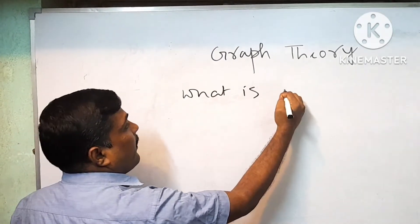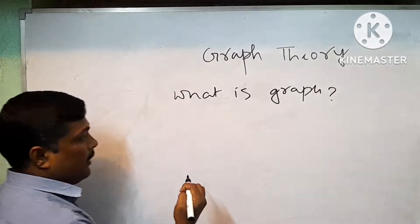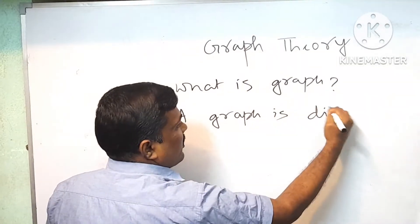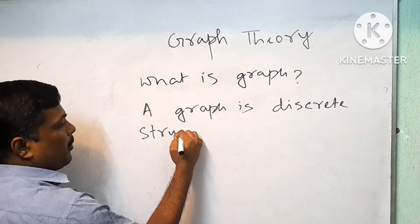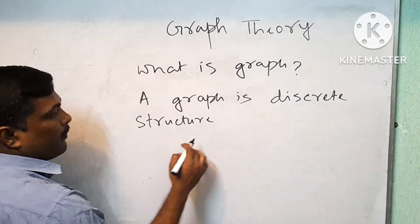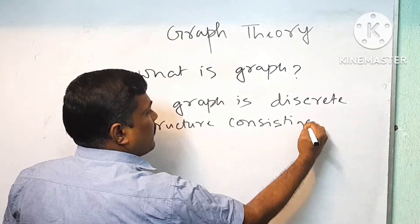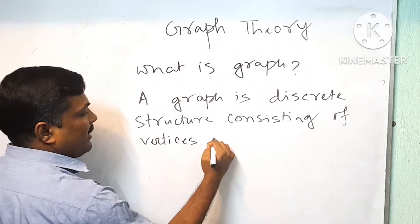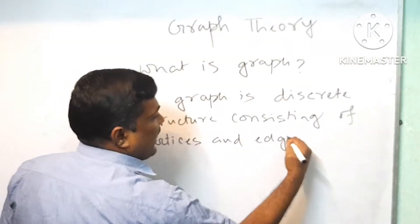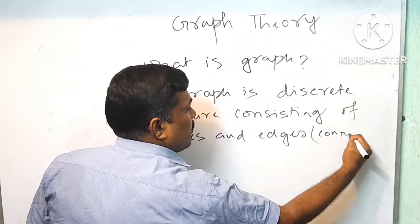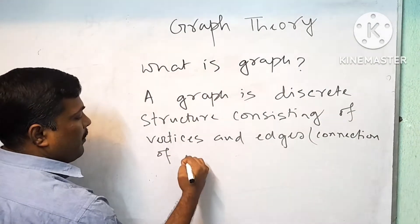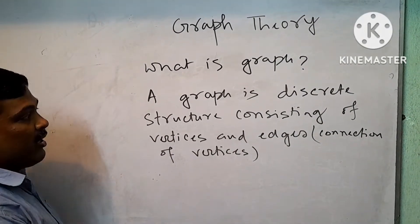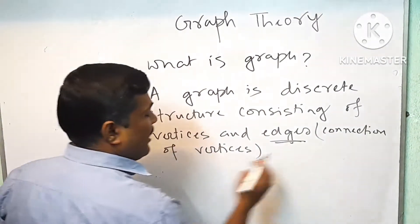What is a graph? A graph is a discrete structure consisting of vertices and edges. What are edges? Edge means the connection of vertices.